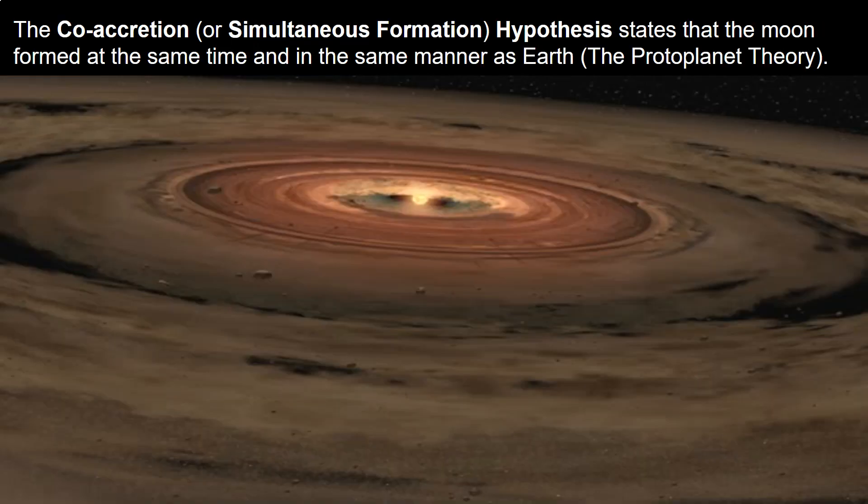The first theory is the co-accretion or simultaneous formation hypothesis. This hypothesis states that the moon formed at the same time and in the same manner as Earth, looking back to the nebular theory or proto-planet theory as being the most widely accepted.